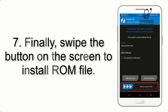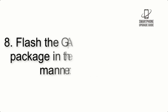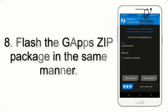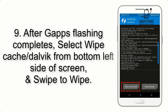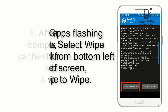Step 7: Finally, swipe the button on the screen to install the ROM file. Step 8: Flash the GApps zip package in the same manner. Step 9: After GApps flashing completes, select Wipe Cache and Dalvik from the bottom left side of the screen and swipe to wipe.